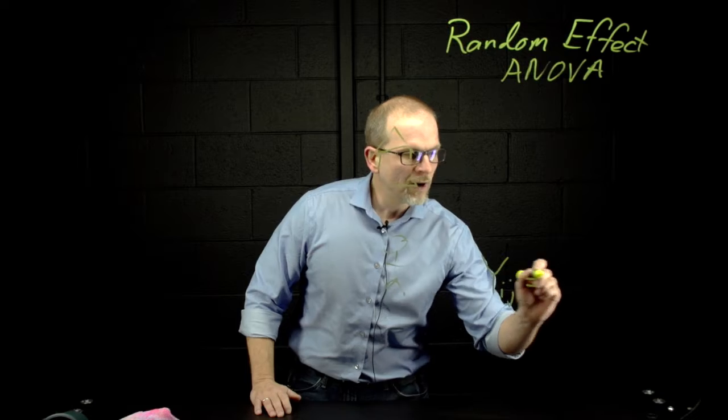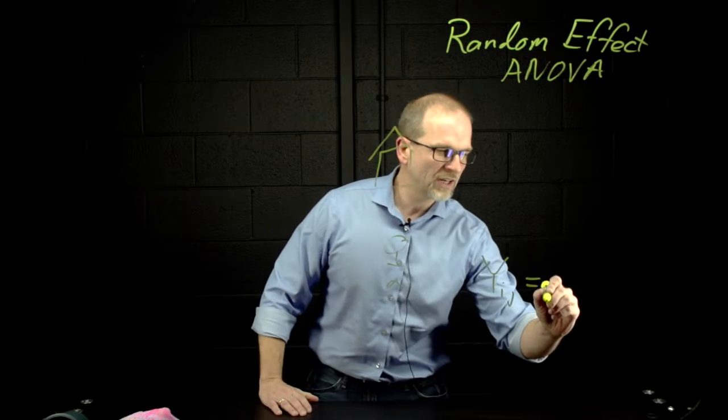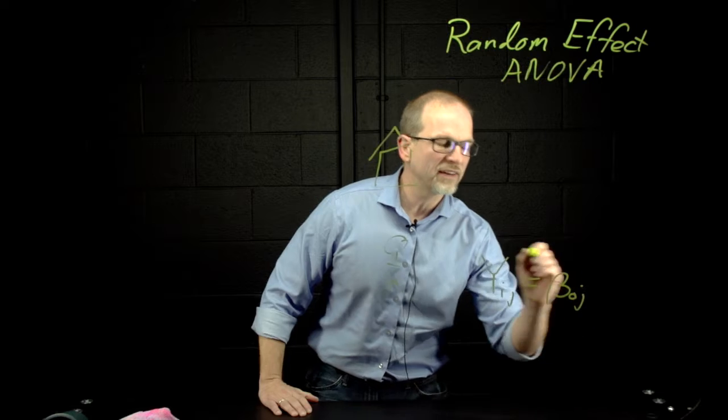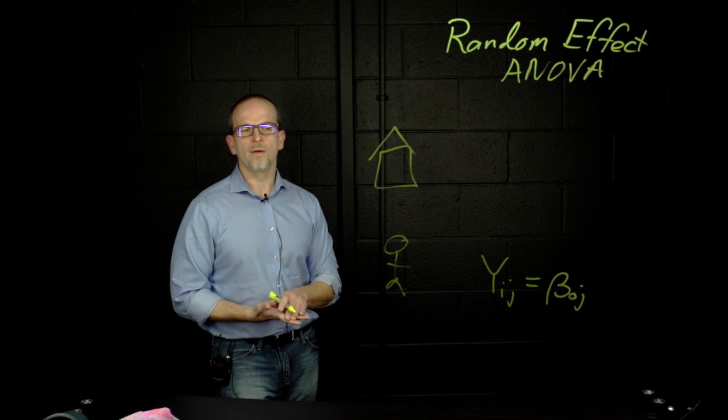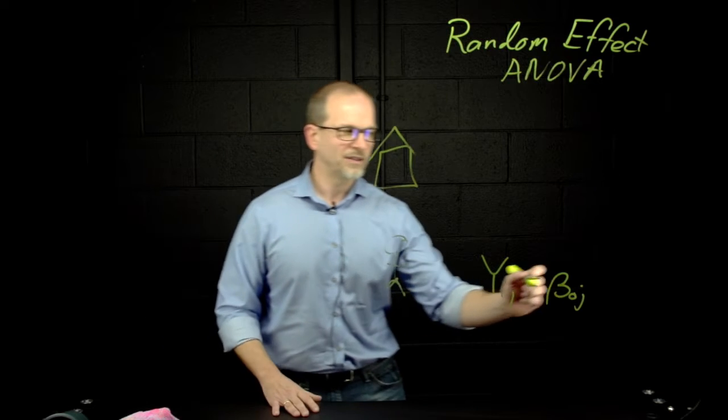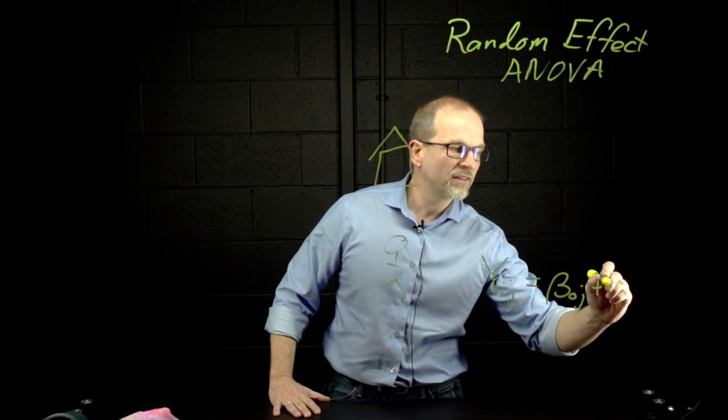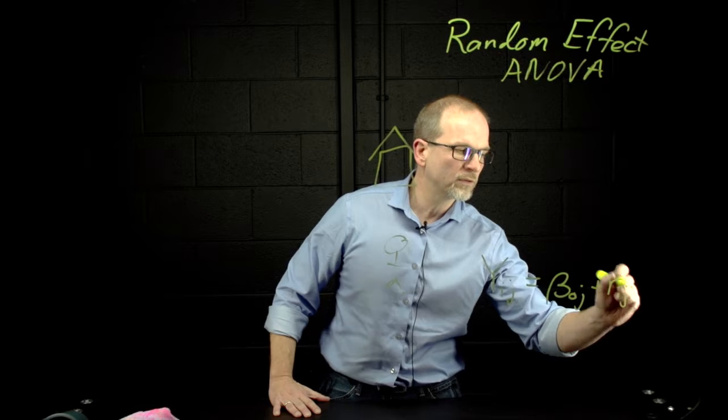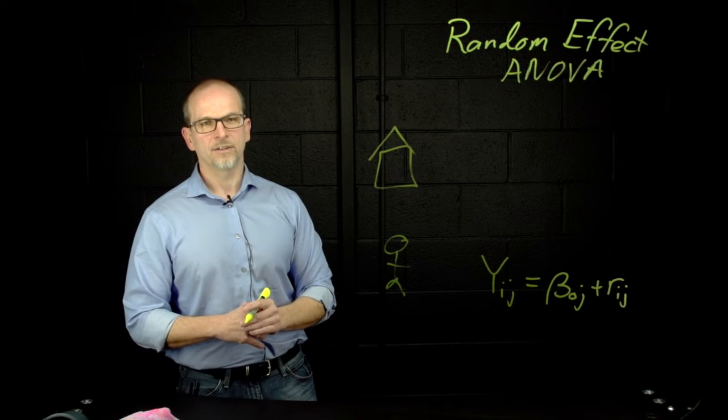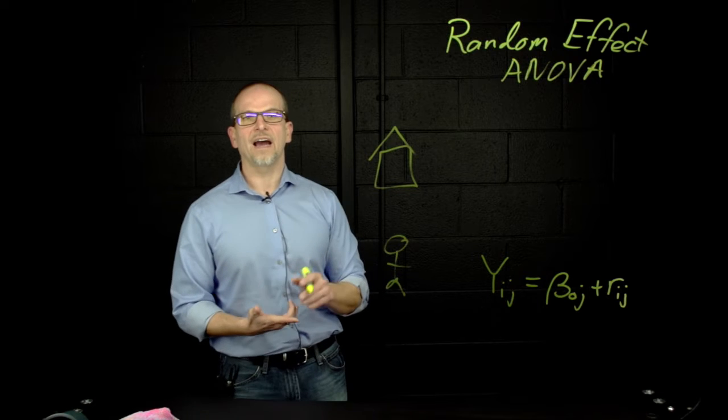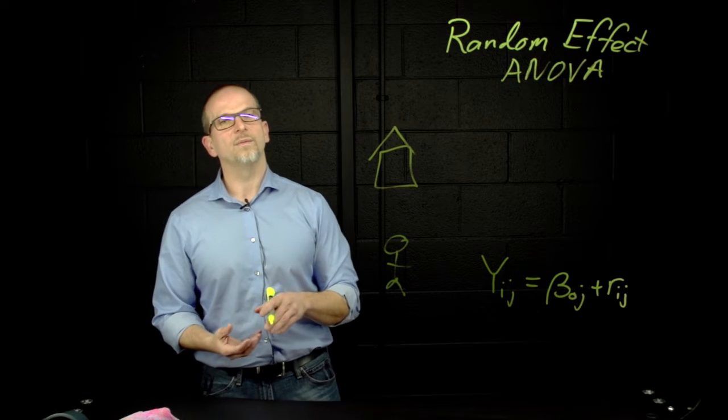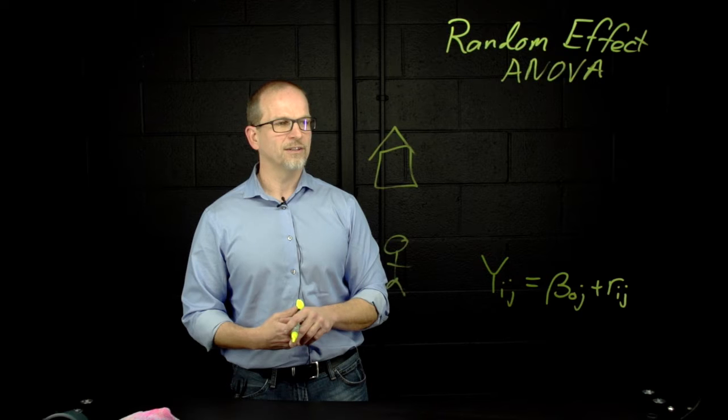Now to model math achievement, we're going to use a beta zero j, where beta zero j is now describing the average math achievement for the jth school. But we also want to allow for the possibility that any given student does not have math achievement that's equal to that average. So we use r sub ij, indicating the extent to which the ith student is different from the jth school average.